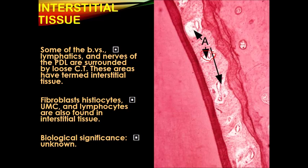Also, we have fibroblasts, histiocytes, and different types of other cells. The periodontal ligament is a dense fibrous connective tissue which occupies the space between the roots of the teeth and the alveolar bone, and is communicated with the gingiva and the pulp of the teeth.